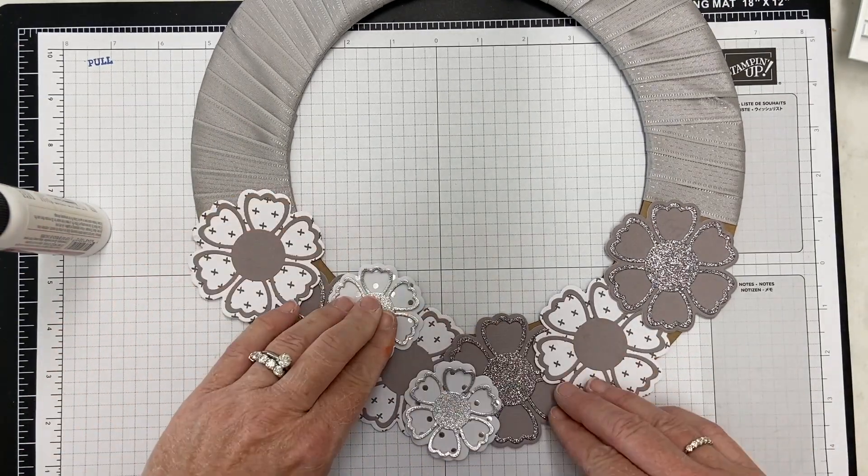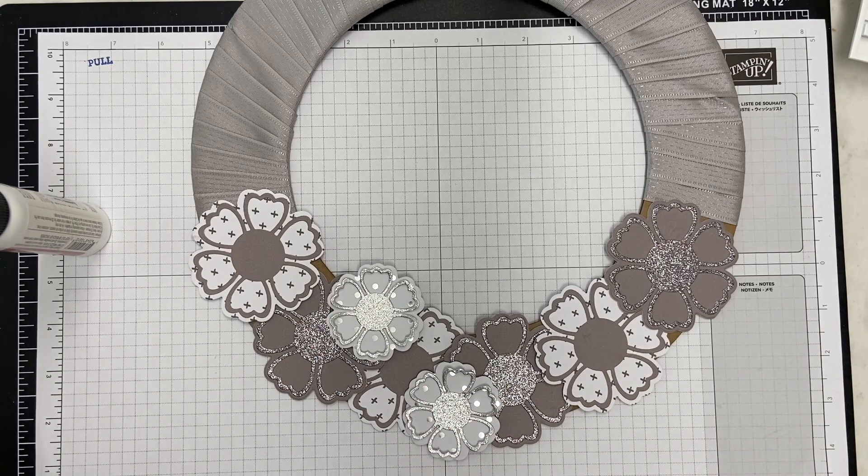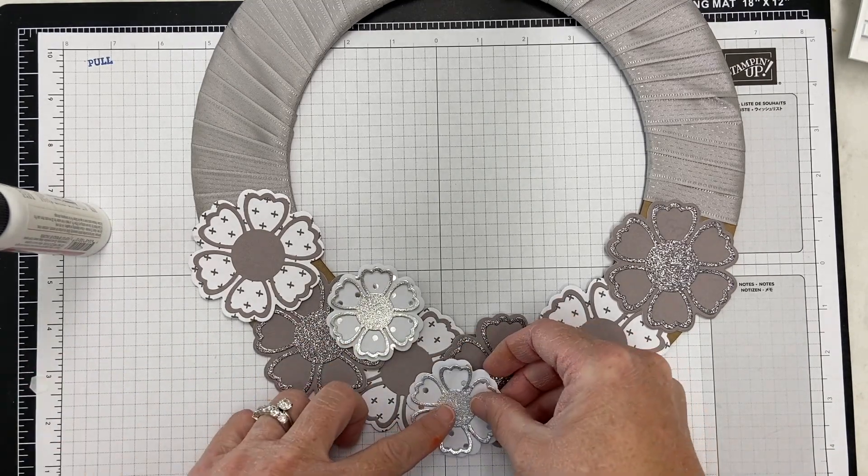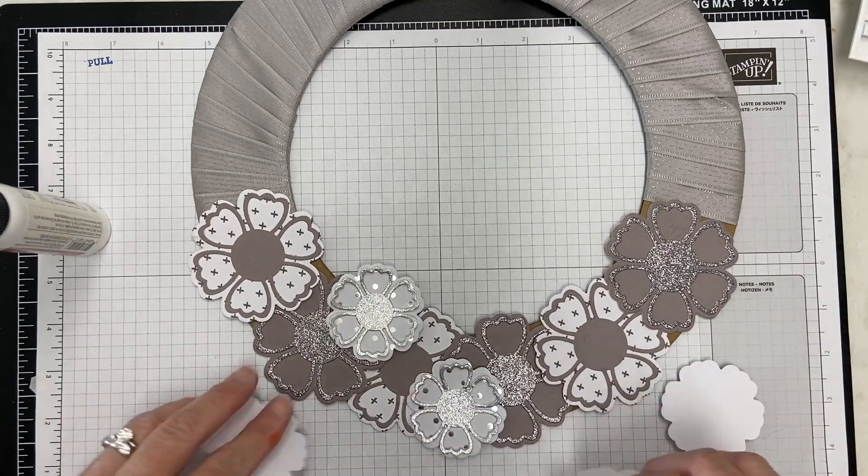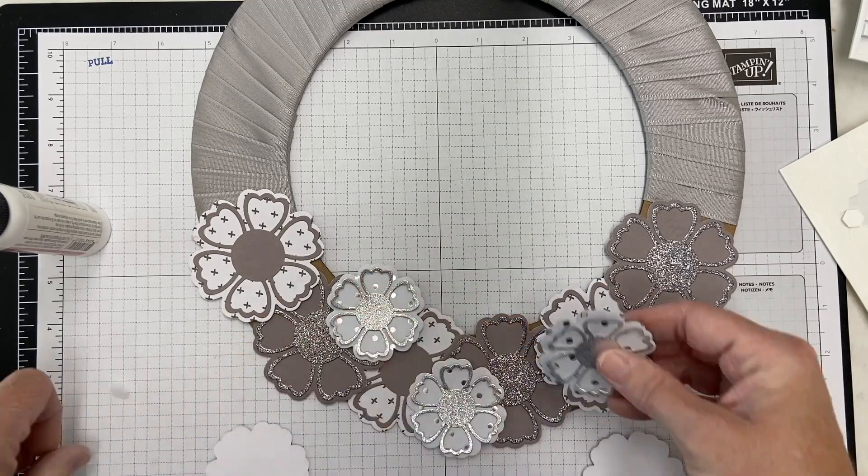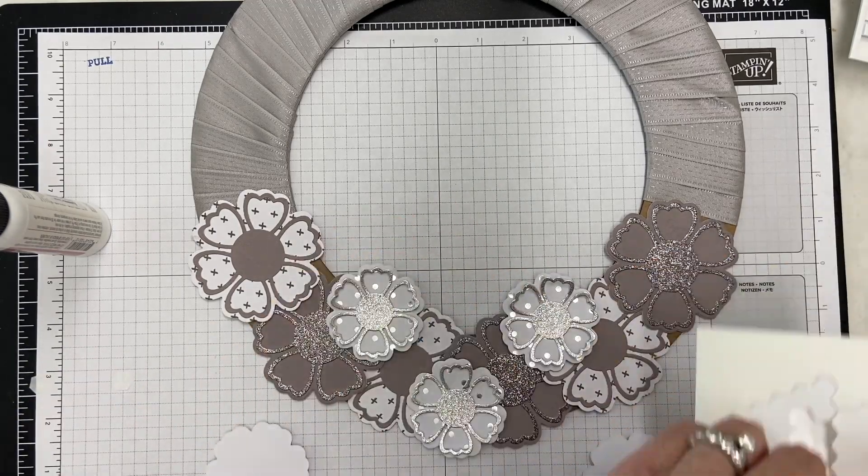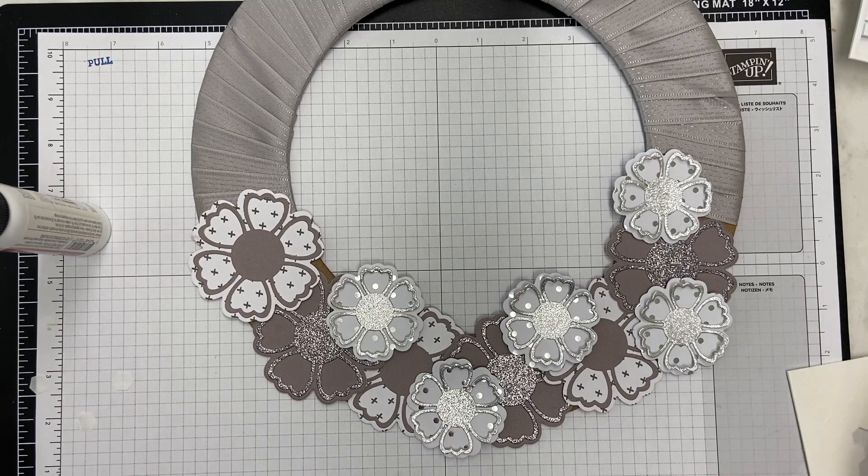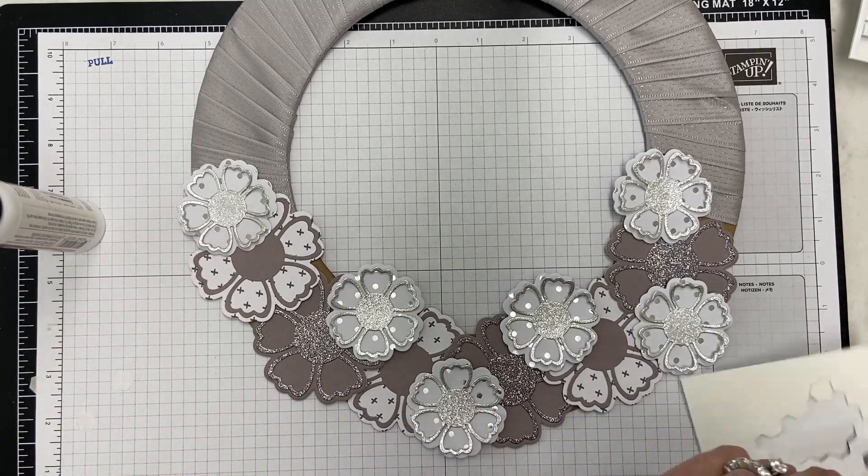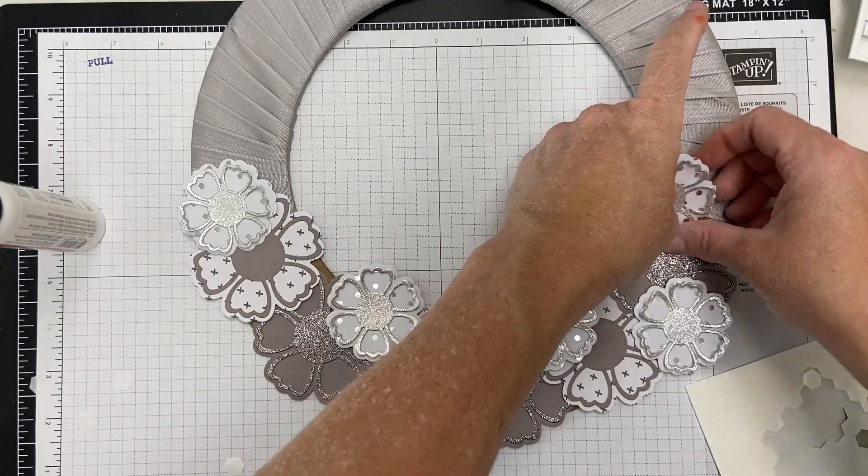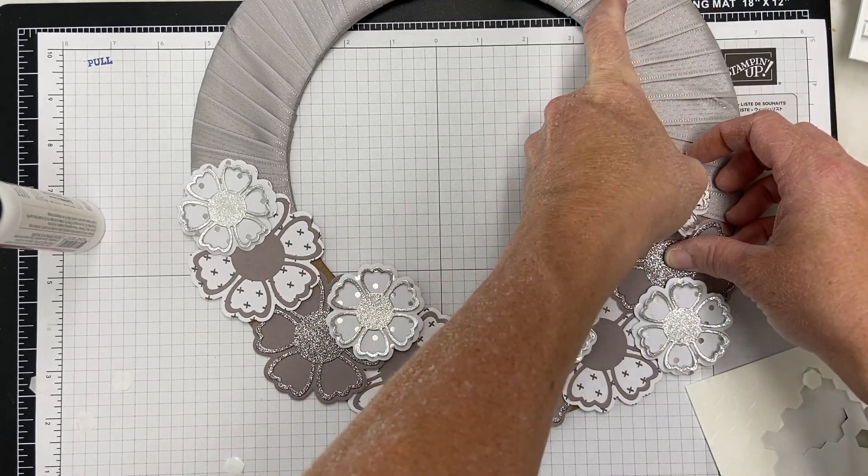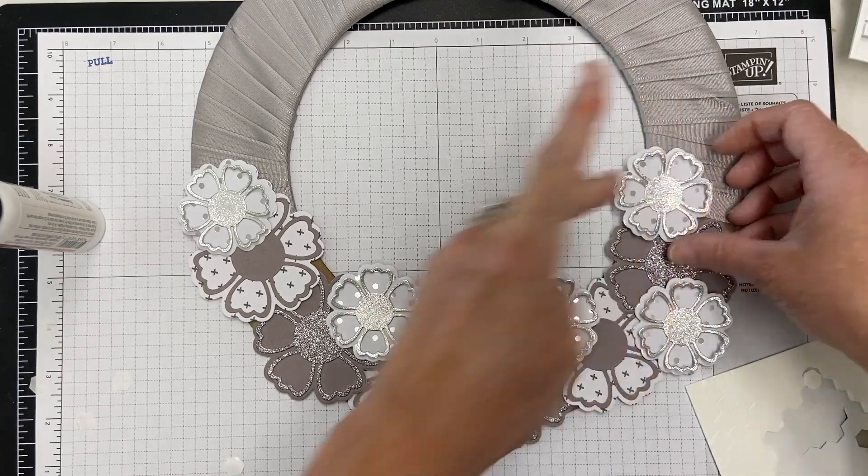I'm just going to do a single layer to start. I've got these larger flowers and I'm kind of alternating with the light and the dark to get some contrast. I want that glitter paper to show up too. I'm going to glue these down, just using adhesive. You could use hot glue as well if you're worried about it, and I've done that before.